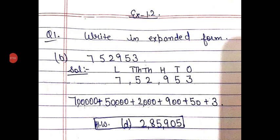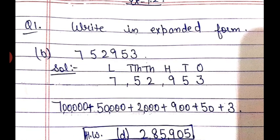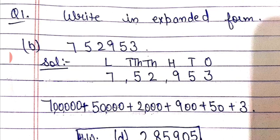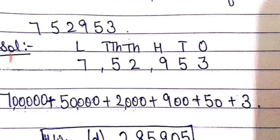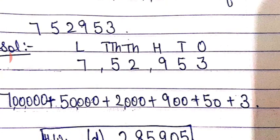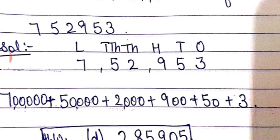Now let's start Exercise 1.2. First question: write in expanded form, as I told you in video lecture number 2. Before writing the expanded form, first write the places: 1, 10, 100, 1000, 10,000, and lakhs. Fill in the number 7,52,953 under those places. Seven is on the lakh place — 7 lakh; 5 is on 10,000 — 50,000; 2 is on 1,000 — 2,000; 9 is on hundreds — 900; 5 is on tens — 50; and 3 is on ones — 3. Writing these with addition signs gives us the expanded form.